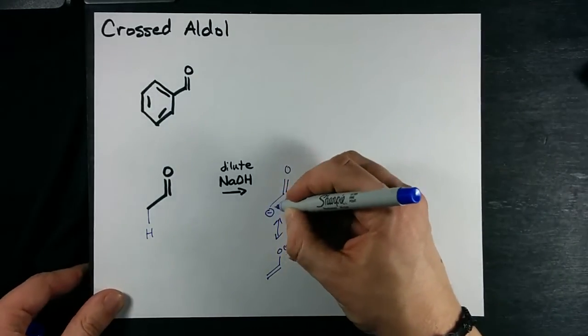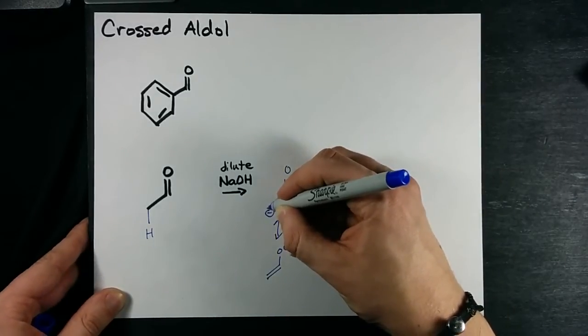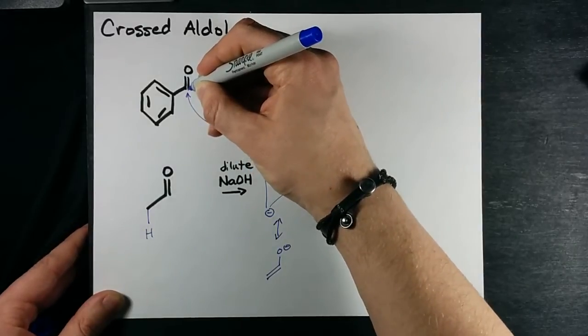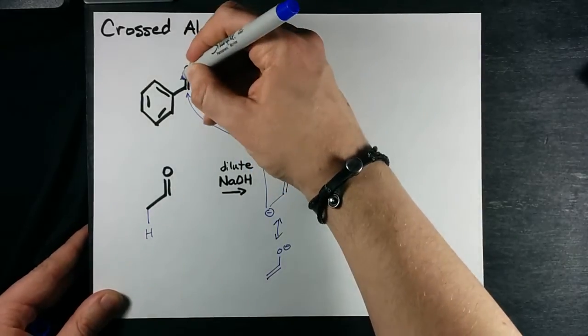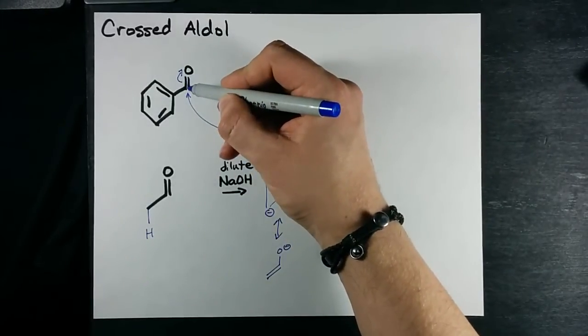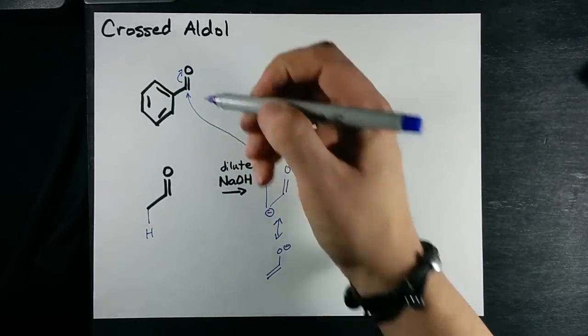I'm going to show this resonance structure reacting with it. This negative charge will be attracted to that carbon. He's delta plus because he's attached to the oxygen, and that displaces the double bond or pi bond electrons to the oxygen.